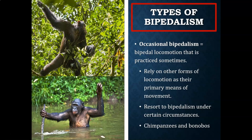Good examples of occasional bipeds would be modern-day chimpanzees and bonobos. Chimpanzees and bonobos are predominantly knuckle walkers and brachiators. Knuckle walking is a form of quadrupedal locomotion, meaning that they're moving on all fours. However, both chimpanzees and bonobos have been observed to be bipedal under certain circumstances, such as standing on branches to reach higher hanging fruit, walking through water using a stick as a tool, carrying food, using a tool, or carrying infants.